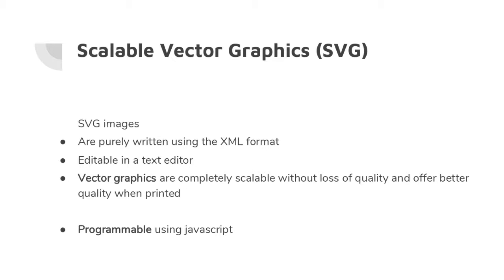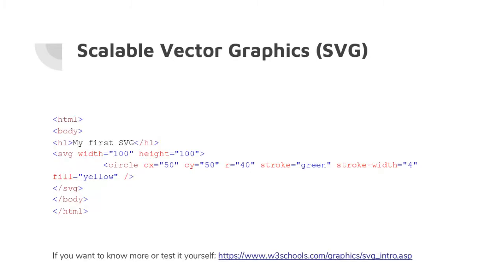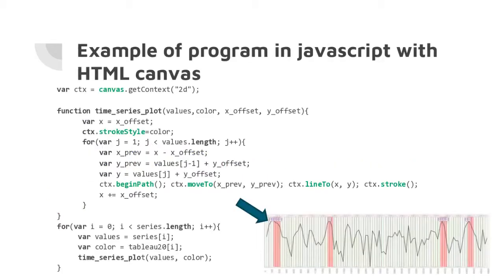You can also program SVG using JavaScript, which means you can create interactive visualizations. Here's a simple SVG example: you have an HTML document with an SVG canvas of 100x100 pixels, and within it a circle with given coordinates and radius — yellow fill color, green outline, and an outline width of four.